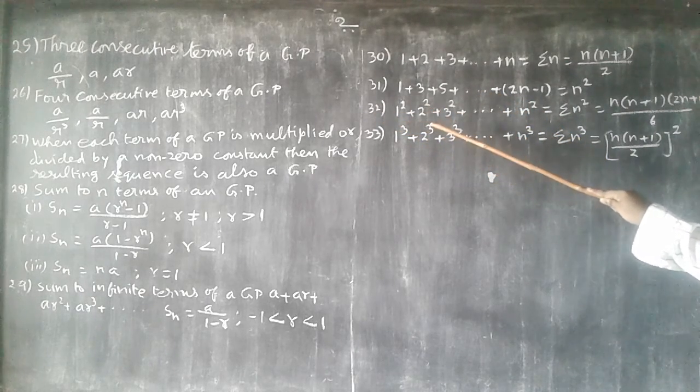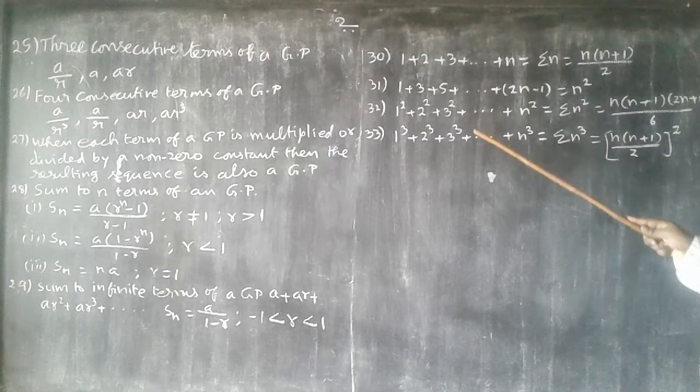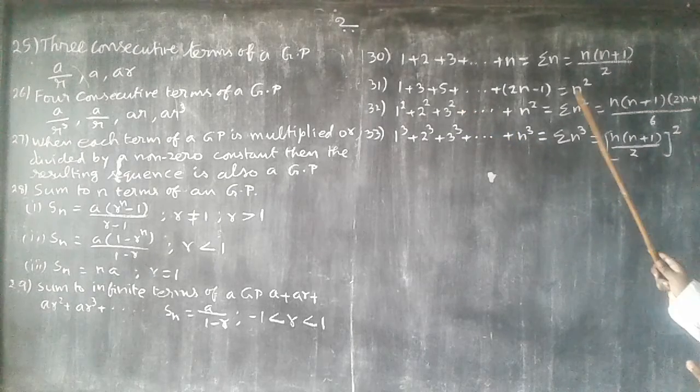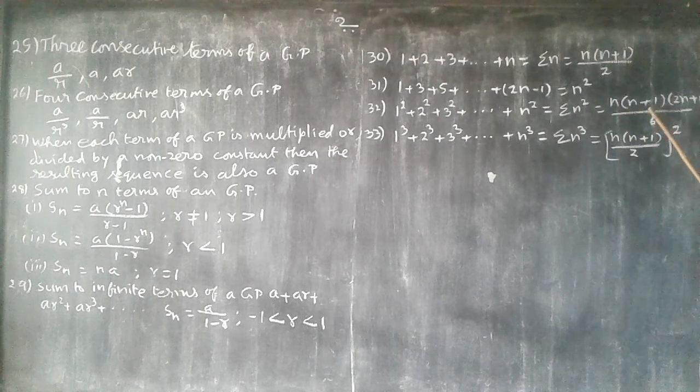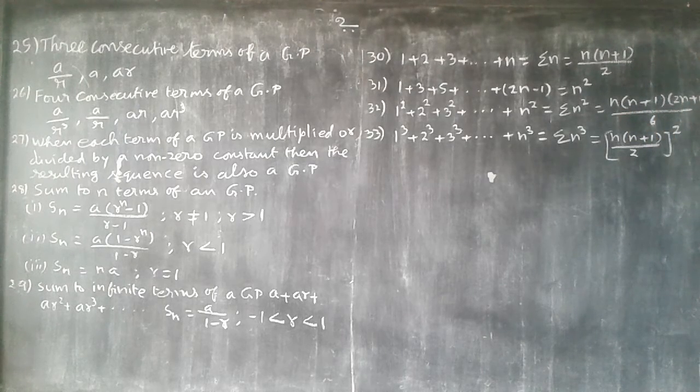32nd. 1 square plus 2 square plus 3 square and so on plus n square. Summation n square is equal to n into n plus 1 into 2n plus 1 divided by 6.